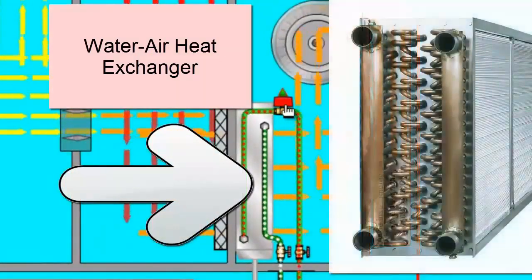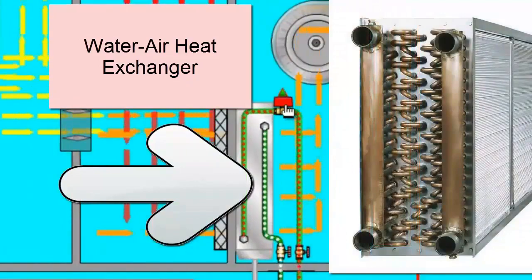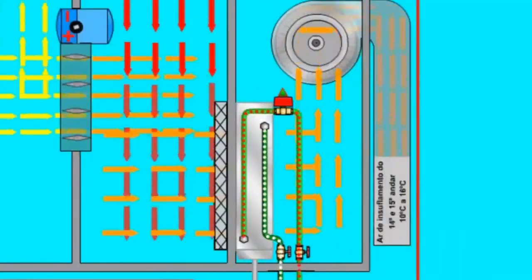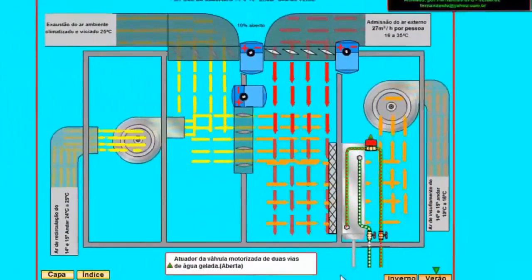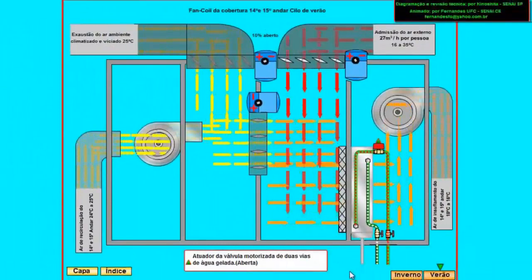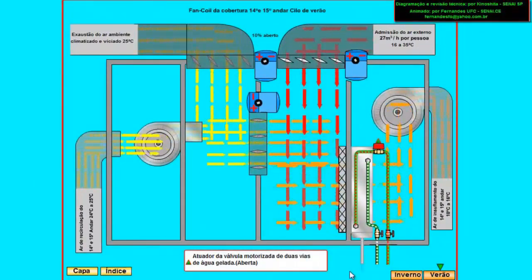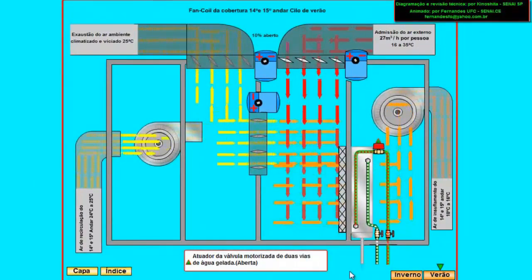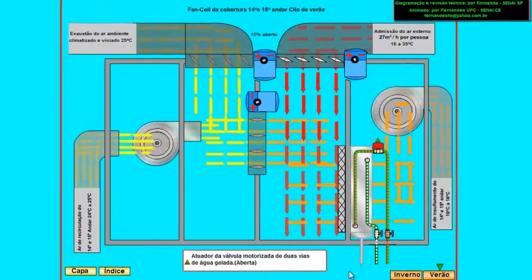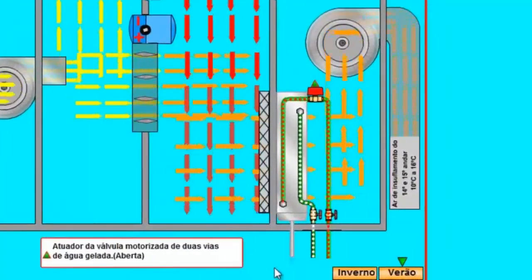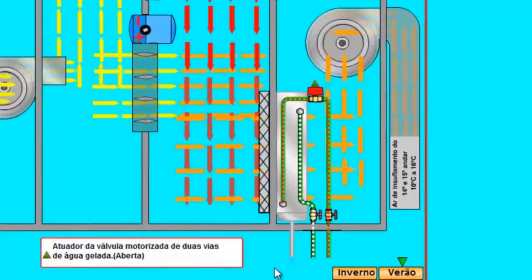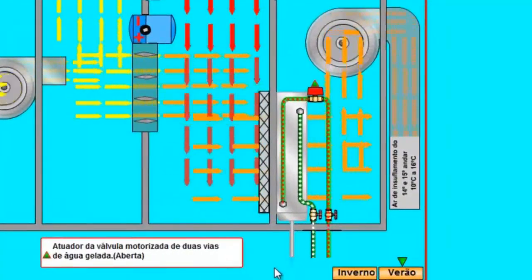Heat exchanger of the air handling unit. At this point the chilled water from the chiller room arrives. The idea is to extract heat from the air. As the chilled water has a lower temperature, the heat passes from the air to the water, causing the cooling of the air which is going to be supplied.